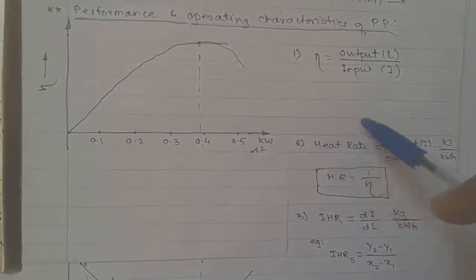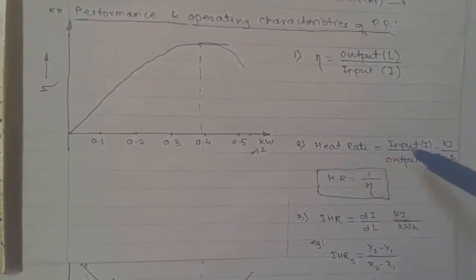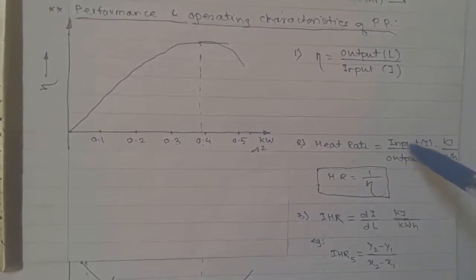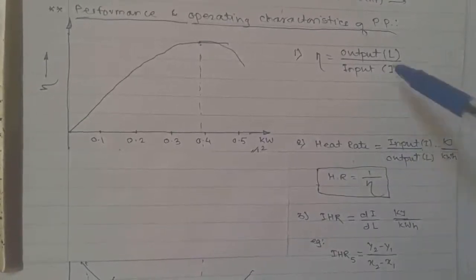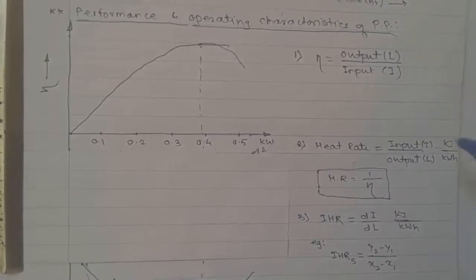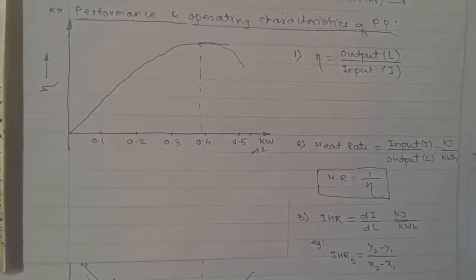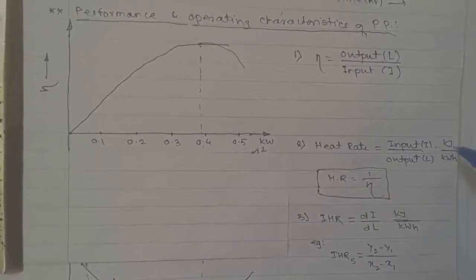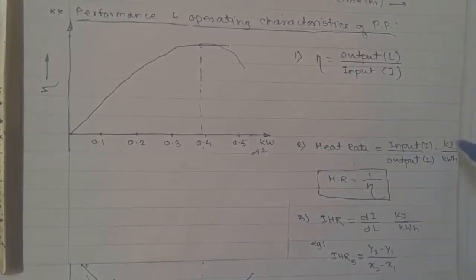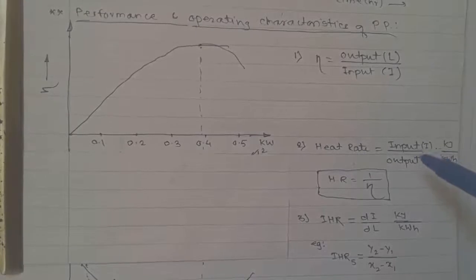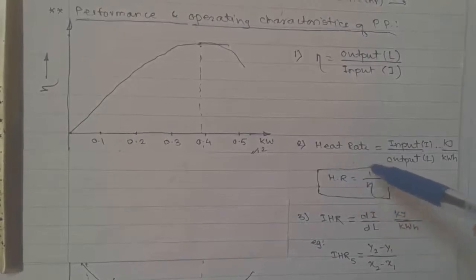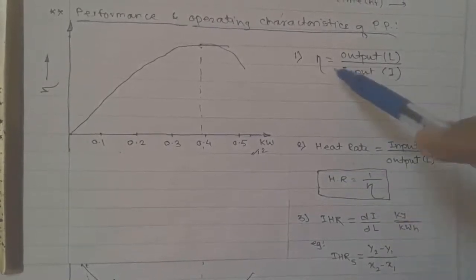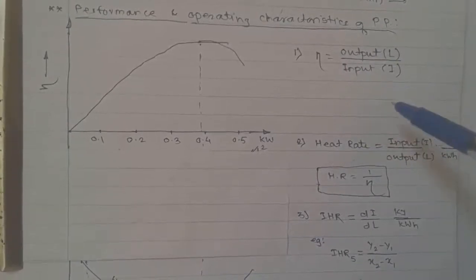The second parameter is heat rate, which is the ratio of input to output. In the case of efficiency, output is in kilowatts, while for heat rate, output is considered in kilowatt-hours, that is in terms of units. So the unit of heat rate is kilojoules per kilowatt-hour. Heat rate is the reciprocal of efficiency, or equivalently, efficiency is the reciprocal of heat rate.